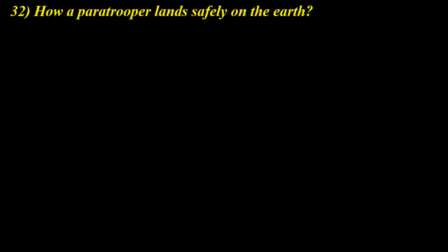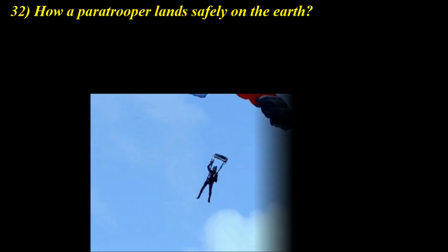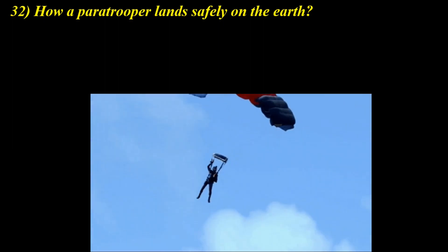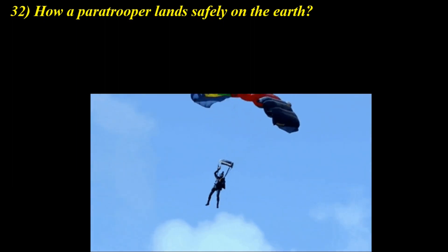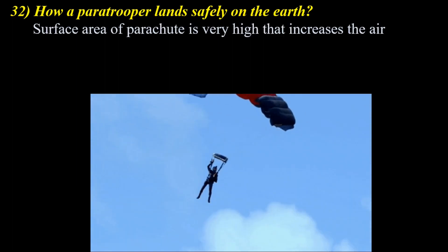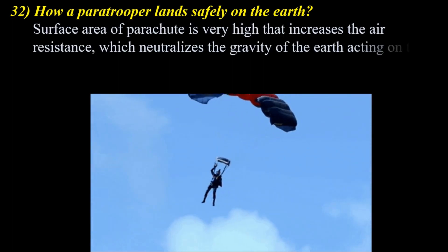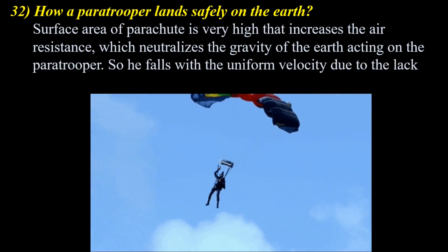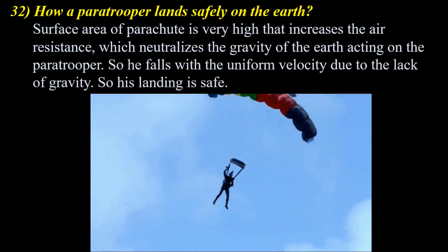How does a paratrooper land safely on the Earth? A parachute has a very large surface area. That's why the air resistance on the surface of the parachute will be very high. This huge air resistance neutralizes the gravity force acting on the body of the paratrooper, so he falls with uniform velocity. The large surface area of the parachute increases the air resistance, which neutralizes the gravity of the Earth acting on the paratrooper, so he falls with uniform velocity due to the lack of net gravity. Hence, his landing is safe.